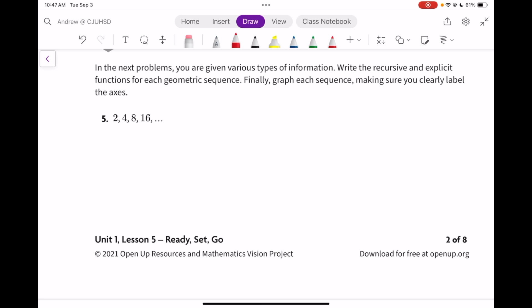What kind of a sequence is this? It is geometric. We're going to figure out the recursive, the explicit. We're going to graph it. And we're going to label the axes. So we're going up 2, up to 4, and up 8. It's not a common difference. It's a common ratio.